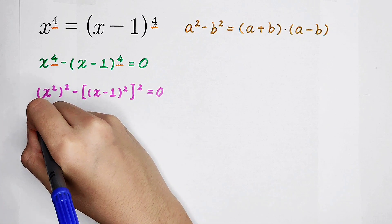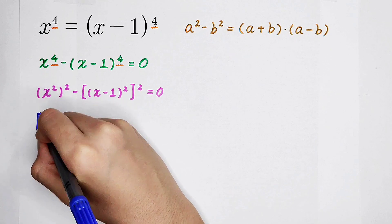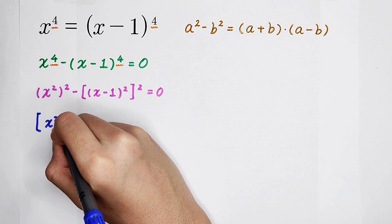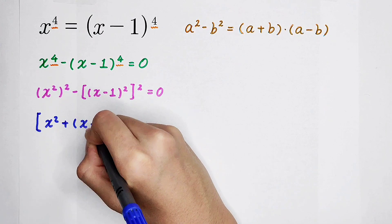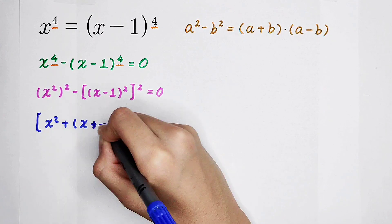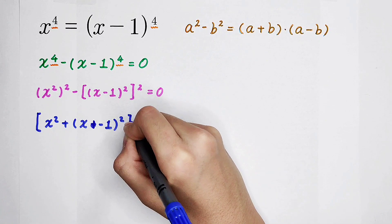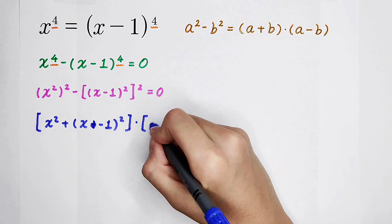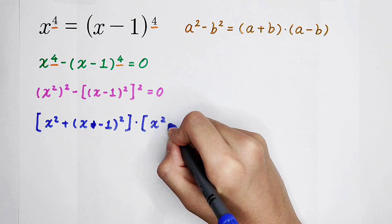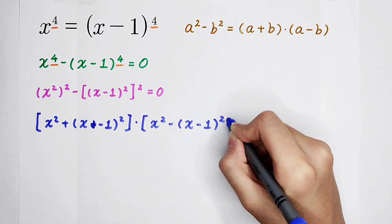So, it is a plus b, x squared plus x minus 1 squared, and then times x squared minus x minus 1 all squared.